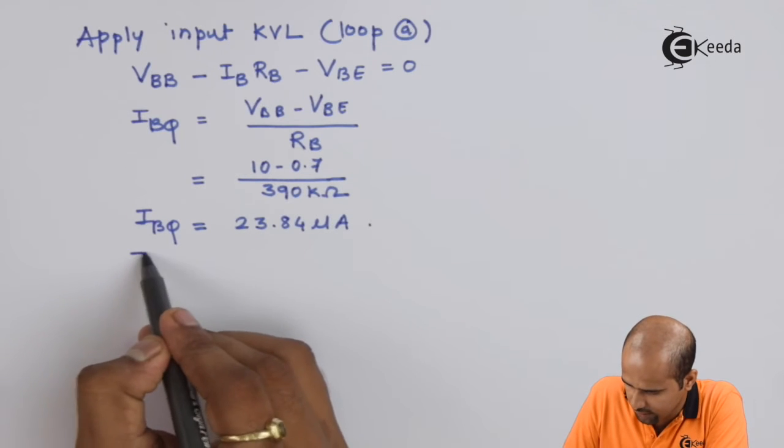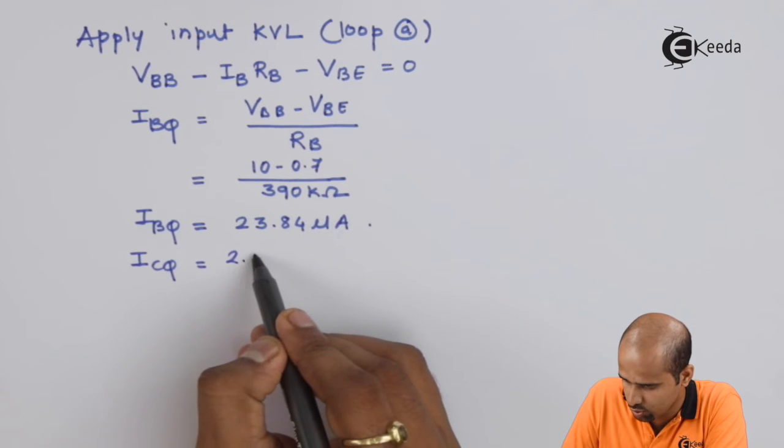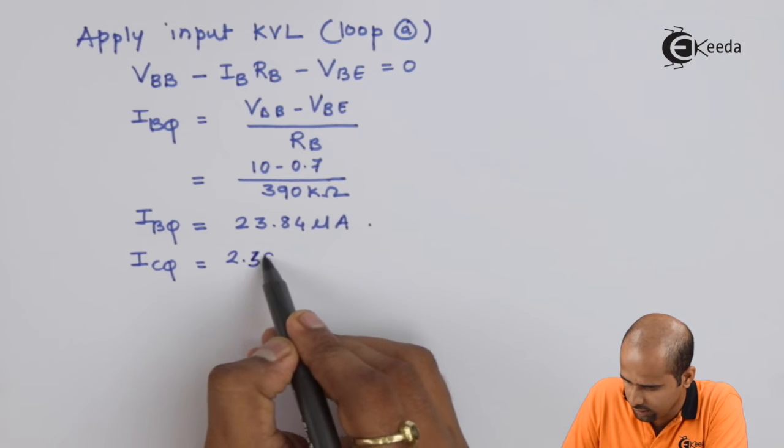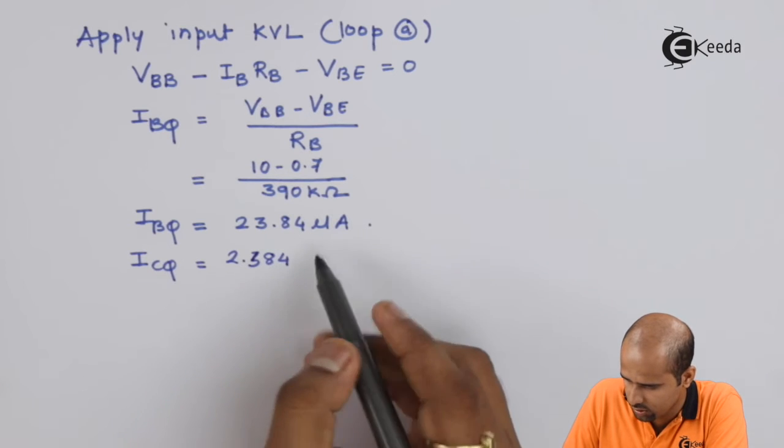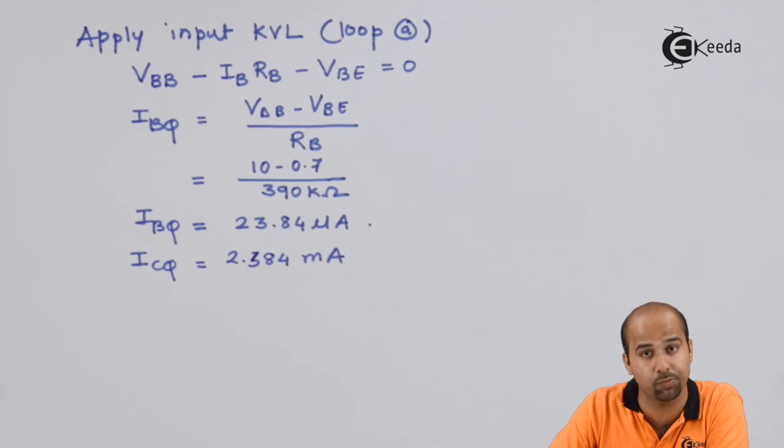The value is 23.84 microamps. Again, we'll find ICQ, which is 2.384 mA. This time I'm multiplying by 100, the value of beta.